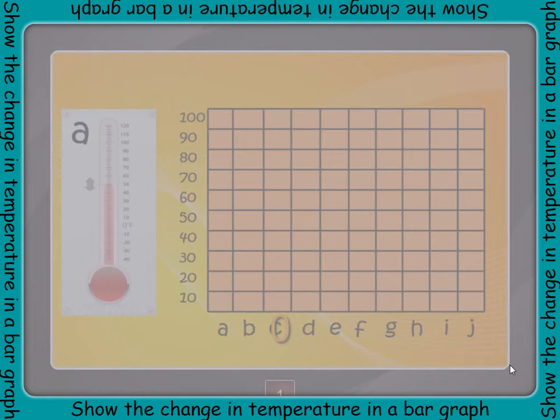Find the number on the side of the graph and the correct letter on the bottom. Next, put blocks into each spot until they reach the same line as the number of the temperature. Continue doing this until you have completed the graph.